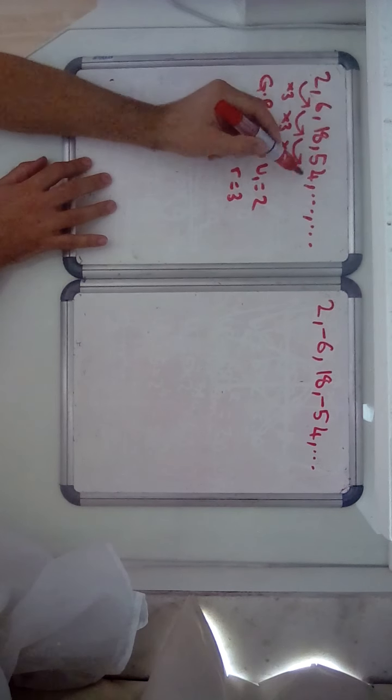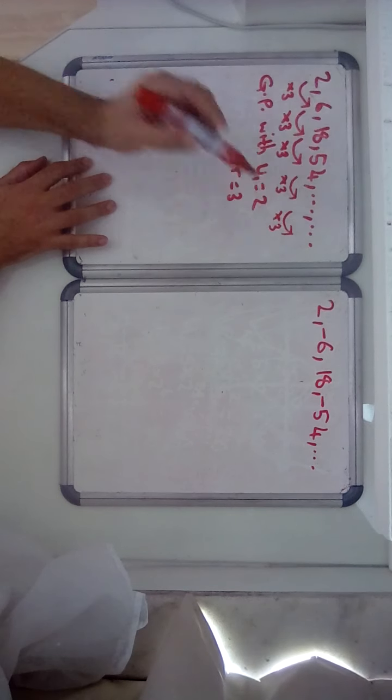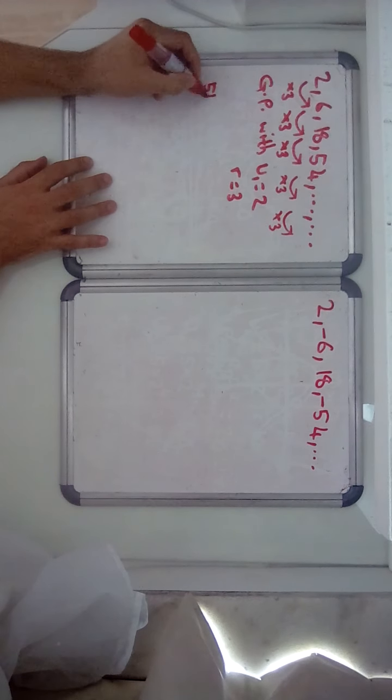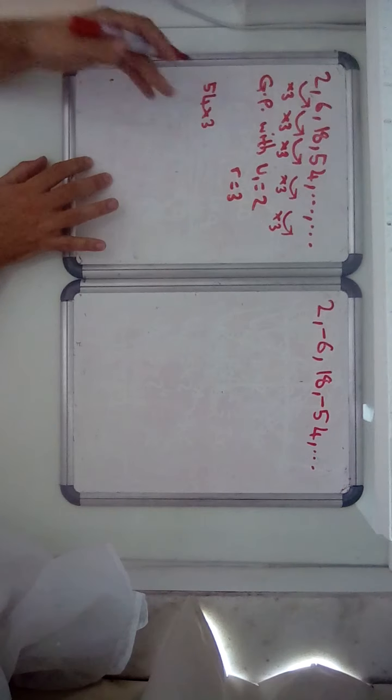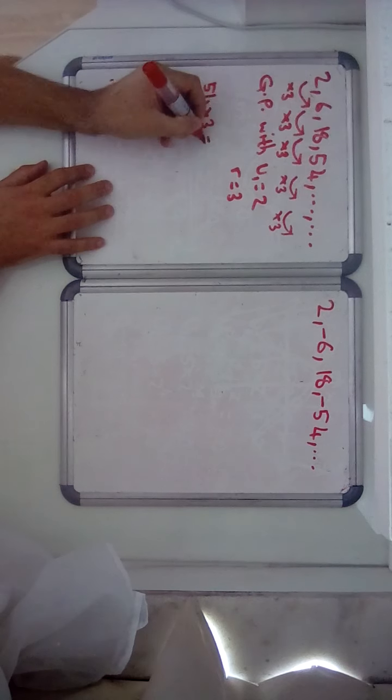We're going to multiply by 3. That is going to give you 54 times 3, or 50 times 3 is 150, 4 times 3 is 12, 50 plus 12 is 162.